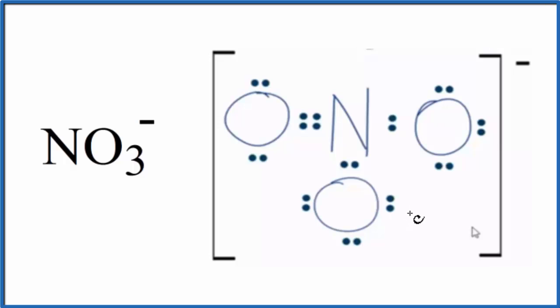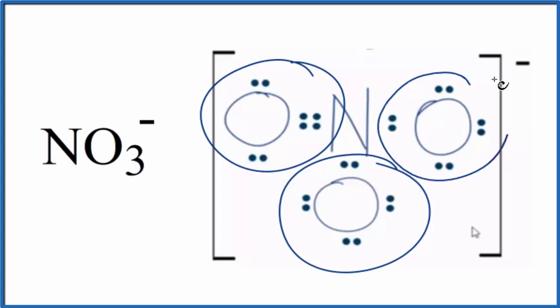If you need help drawing the Lewis structure, there's a link in the description. We can see that the central nitrogen has three things attached to it - these three oxygen atoms. They're going to spread out as far away from each other as they can, and that will give us the molecular geometry.